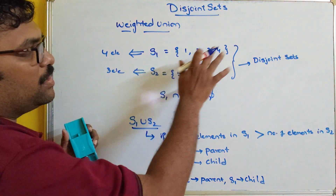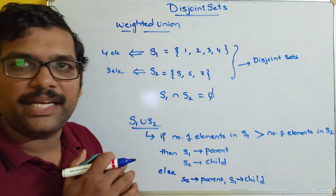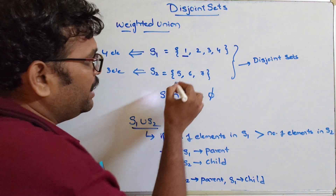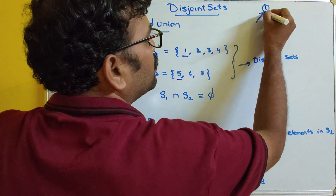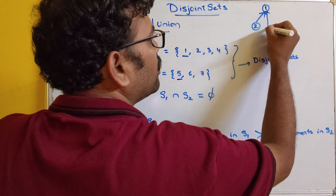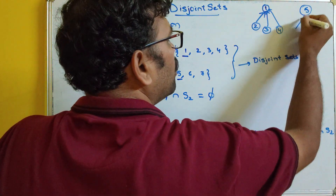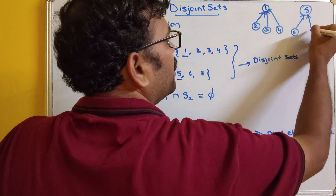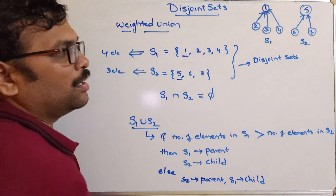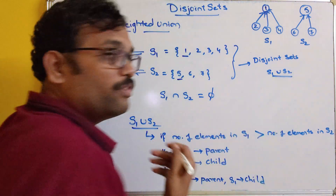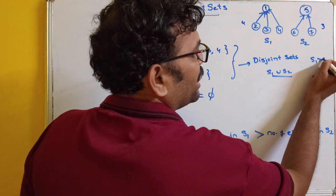Let me give an example. As we discussed in our previous session, the set is represented with a tree structure. For S1, element 1 is the root, which is parent of 2, parent of 3, parent of 4. For S2, element 5 is the root, which is parent of 6 and parent of 7. This is S1 and this is S2. Now S1 union S2: S1 has 4 elements, S2 has 3 elements, so S1 is greater than S2. S1 will be the parent, S2 will be the child.